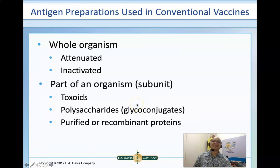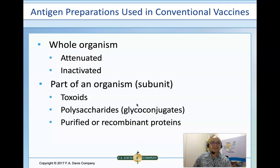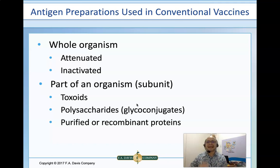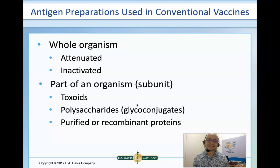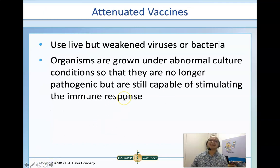There are several ways of preparing vaccines in conventional or traditional approaches. You can either use whole organisms — either attenuated (weakened) or inactivated (killed) — or you can use a subunit vaccine, where you use just part of an organism, such as toxoids, polysaccharides, glycoconjugates, purified proteins, or recombinant proteins.